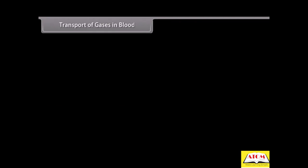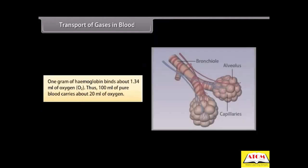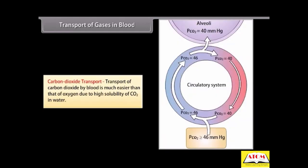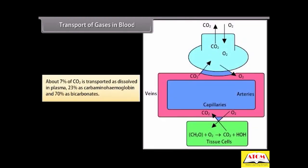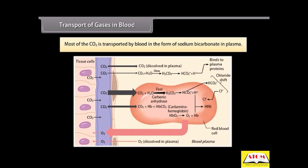Transport of gases in blood. Oxygen transport: 98.5% of oxygen is transported by blood with the help of the respiratory pigment hemoglobin present in erythrocytes. One molecule of hemoglobin can carry as much as four oxygen molecules. One gram of hemoglobin binds about 1.34 ml of oxygen. Thus, 100 ml of pure blood carries about 20 ml of oxygen. Carbon dioxide transport: transport of carbon dioxide by blood is much easier than that of oxygen due to high solubility of CO2 in water. About 7% of CO2 is transported as dissolved in plasma, 23% as carbaminohemoglobin, and 70% as bicarbonates. Most of the CO2 is transported by blood in the form of sodium bicarbonate in plasma.